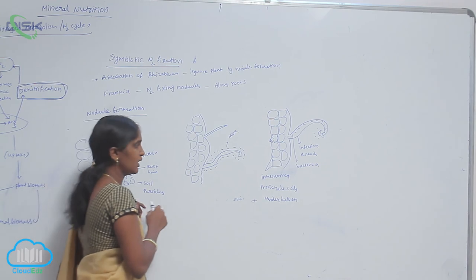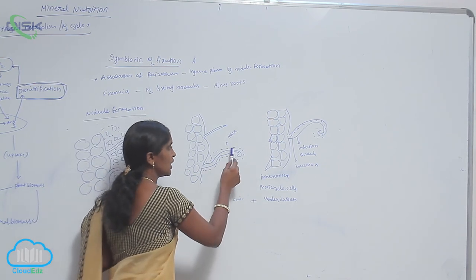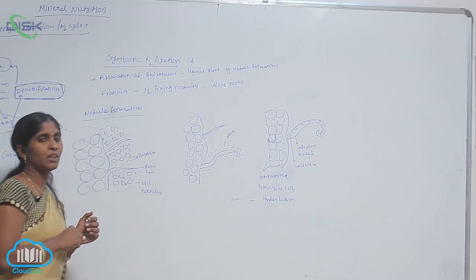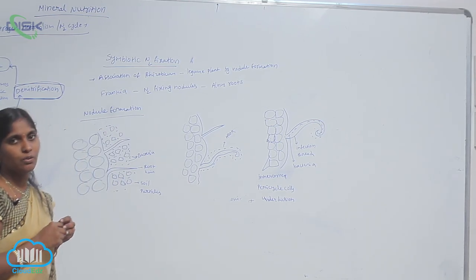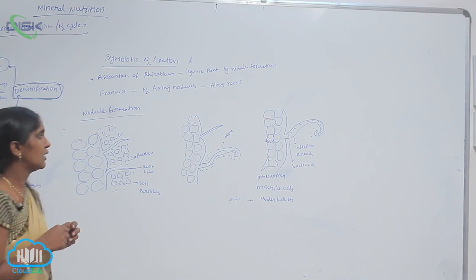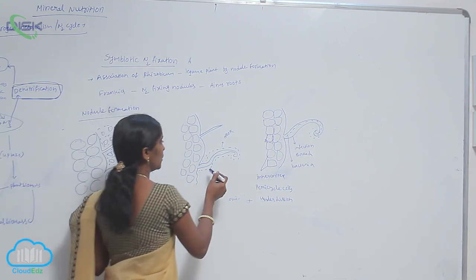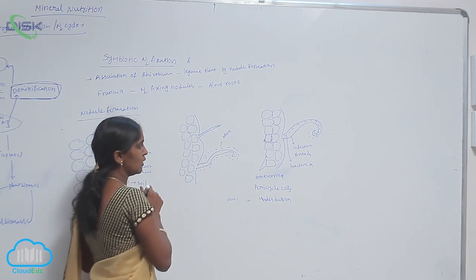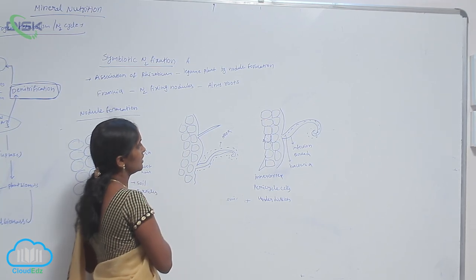After joining, the root hair shape is changed as hook-like for invading of rhizobium bacteria. The hook is produced. Through this hook, this is called infection thread.